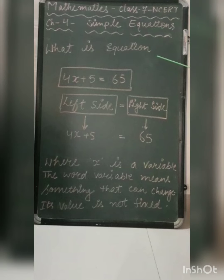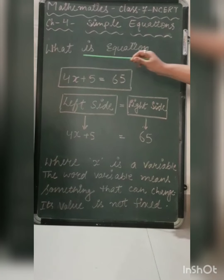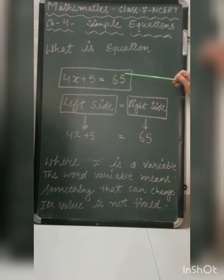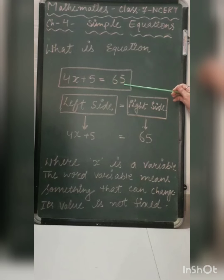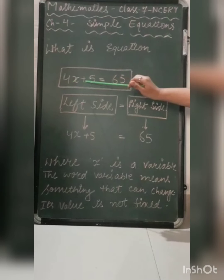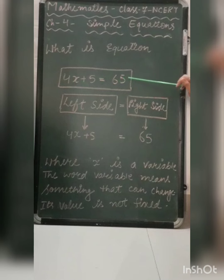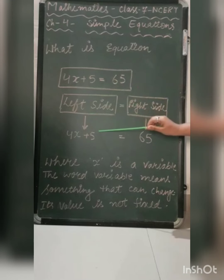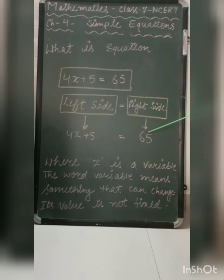In this chapter, first I will explain what is an equation. An equation is a mathematical statement equating two quantities. A statement that contains the symbol equal is called equality. You can see that I have written one equation: 4x plus 5 equal to 65. The equality sign shows that the value of the expression on the left hand side is equal to the value of the expression on the right hand side.